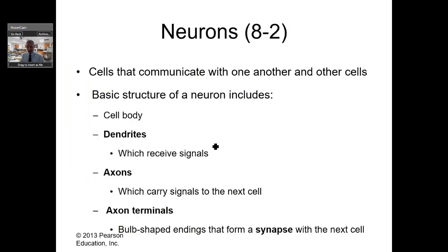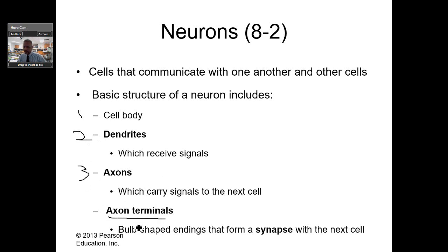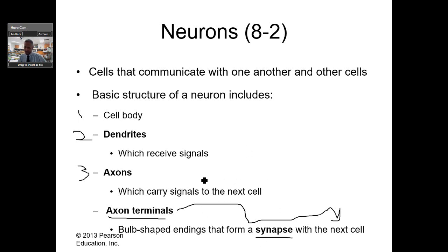Let's talk about a neuron. We've got three distinct parts: the cell body, the dendrite, and the axon. The axon has a part called the axon terminal, which is the part that interacts with the next cell. That communication is called a synapse — the space between them is called a synapse, but we'll get into that later.